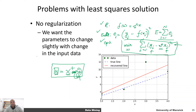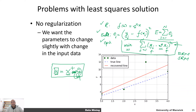One of the things — just like the perceptron — that you must have noticed is that this error or optimization function only has an error minimization component. So all we are doing is empirical risk minimization. There is no structural risk minimization. Ideally, we should have a regularization term associated with it as well.